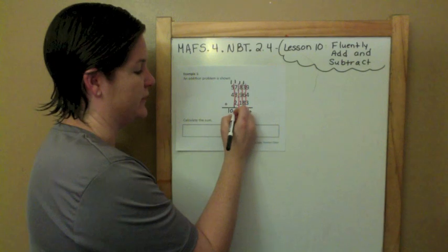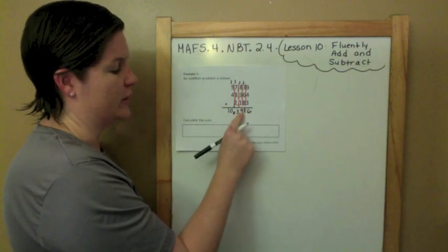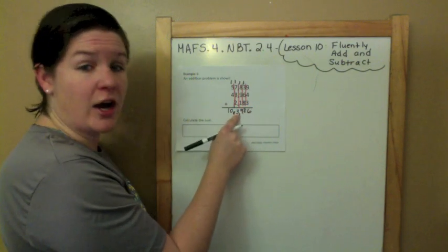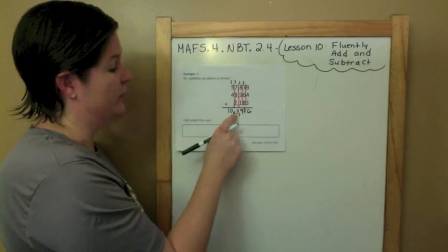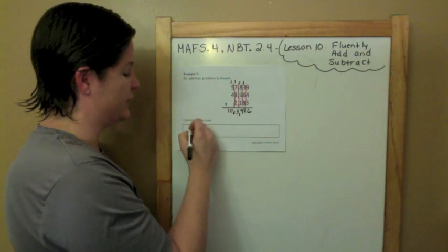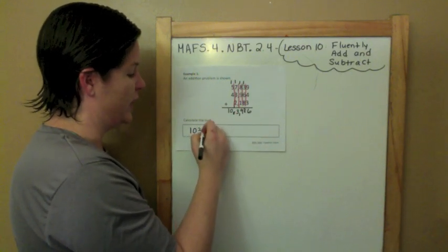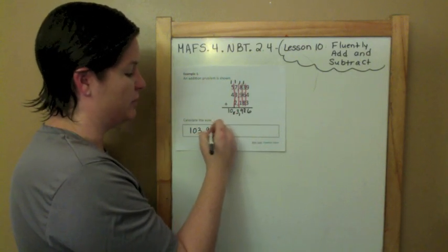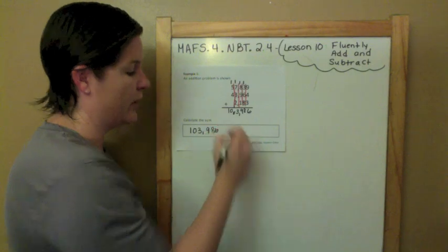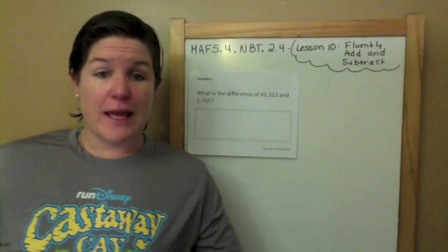The comma goes right here. Ones, tens, hundreds — comma — thousands, ten-thousands, hundred-thousands. Our work does not go in the box, but our answer sure does.